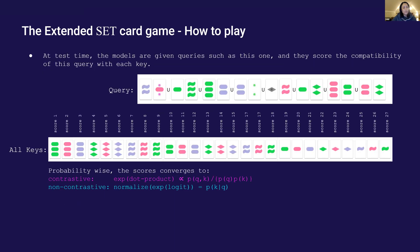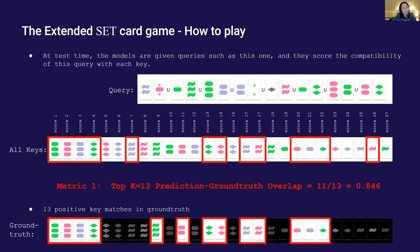At test time, the models are given queries such as this one, and they score the compatibility of this query with each of the 27 keys. There are 13 ground truth keys for this query, so one crude metric is to measure how much the top 13 predictions overlap with the 13 ground truth keys.